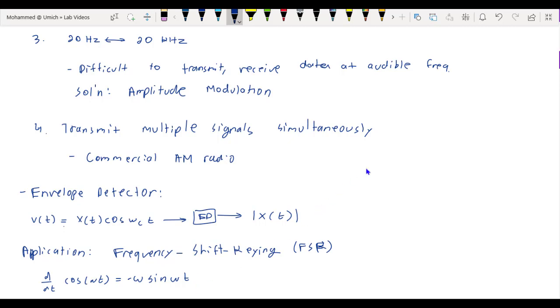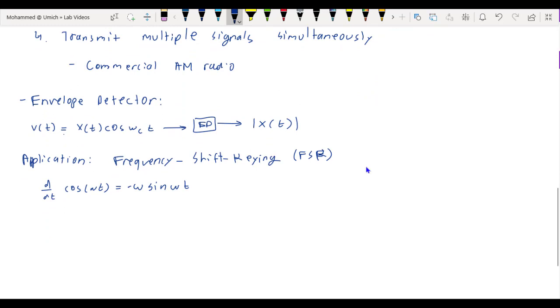And so the output of the differentiator and envelope detector might look something like this. Here's the first two seconds, then here's the next two seconds, and then the next two, and then the next two seconds, and then the last two seconds.